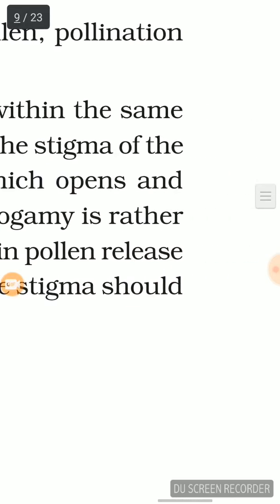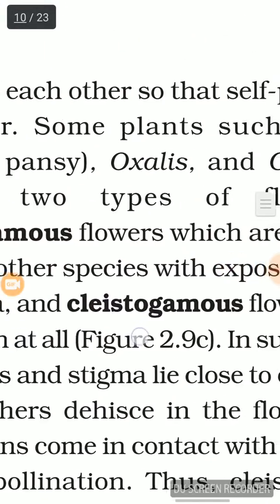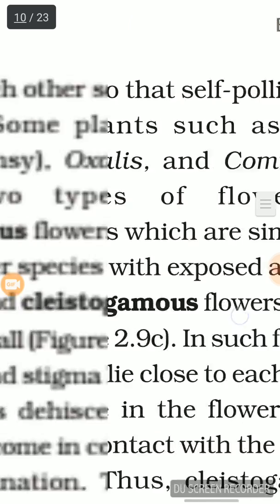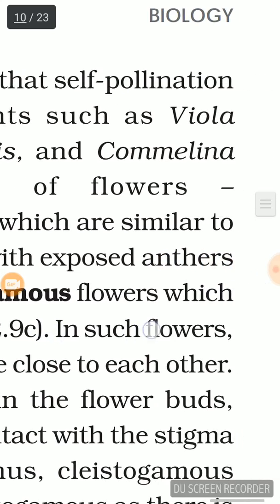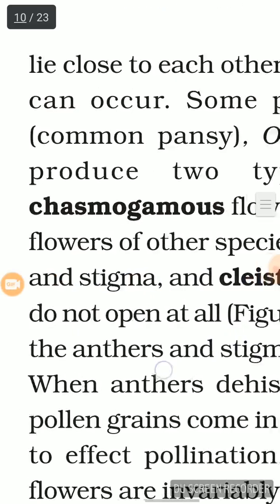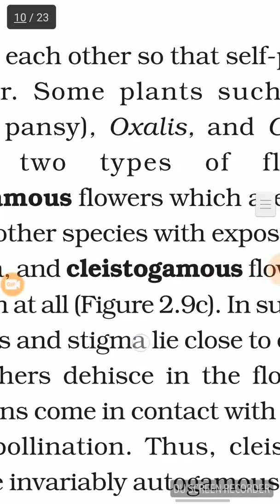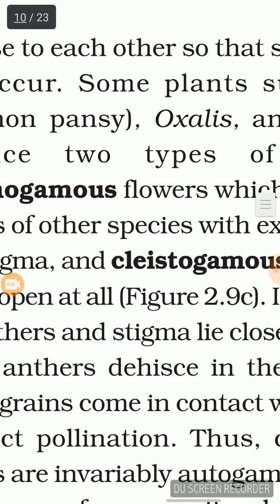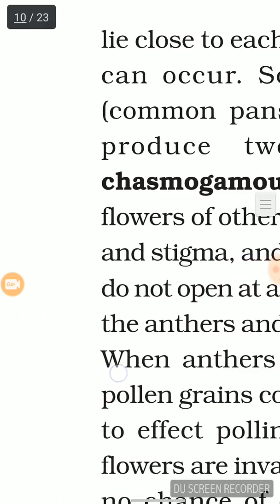Autogamy in such flowers requires synchrony in pollen release and stigma receptivity, and also the anthers and stigma should lie close to each other so that self-pollination can occur. Some plants such as Viola, common pansy, Oxalis, and Commelina produce two types of flowers: chasmogamous flowers, which are similar to other flowers of the species with exposed anthers and open stigma.